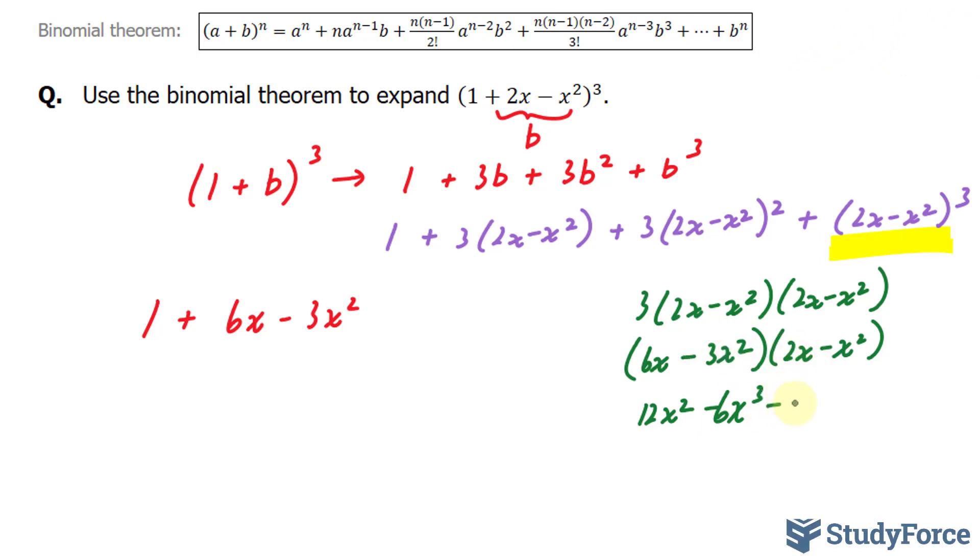That times that gives us -6x³. That times that is -6x³. So these two can be combined. This times this gives us positive x⁴ with the coefficient 3. So I'll replace these terms into here and combining those.